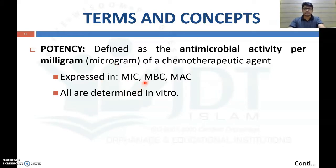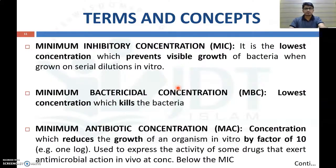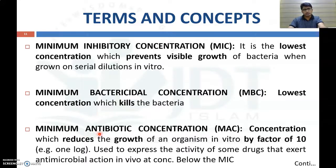Potency can be expressed in different terms: minimum inhibitory concentration (MIC), minimum bactericidal concentration (MBC), and minimum antibiotic concentration, all determined by in vitro experiments. MIC is the lowest concentration that will prevent the visible growth of bacteria when grown in serial dilution in vitro. Minimum bactericidal concentration is the lowest concentration that will kill the bacteria.